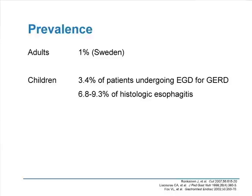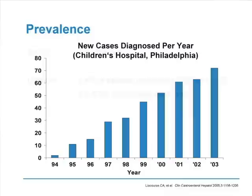The prevalence of EOE is changing over time, as the disease seems to be a more recent development. Practitioners from 20 or 25 years ago didn't even know about the condition. Up to four or five years ago, prevalence in Sweden was about 1% in adults. In the US, it's reported in about 3% to 4% of patients undergoing EGD for GERD, and in 7% to 9% of children with histologic esophagitis.